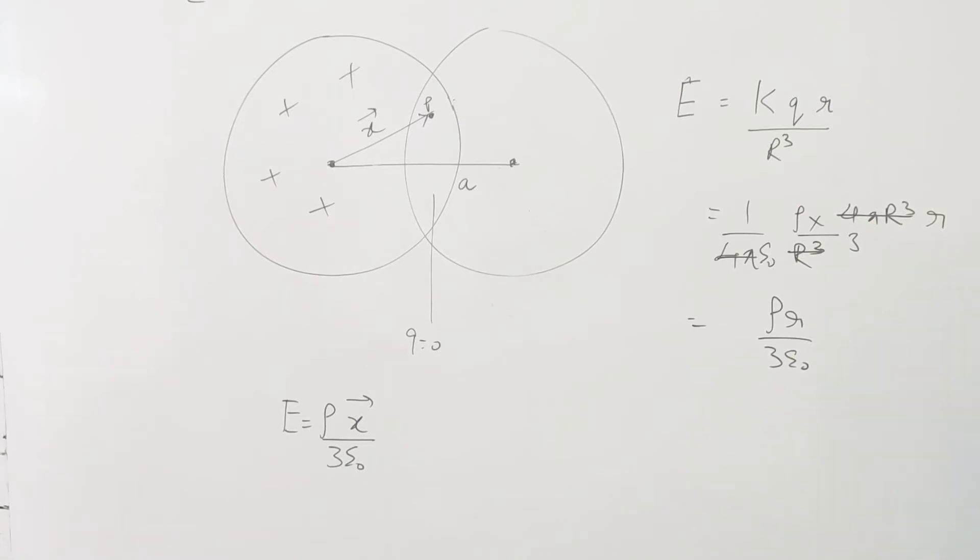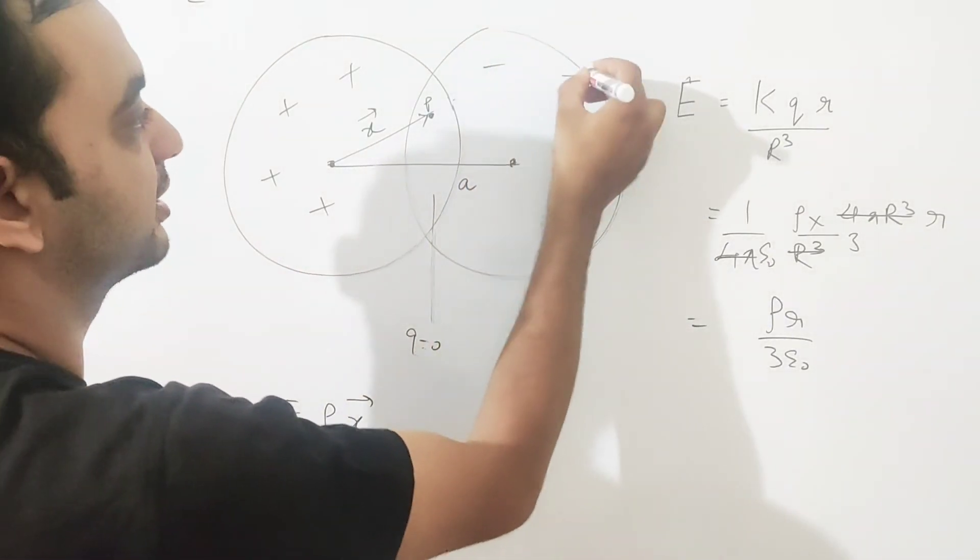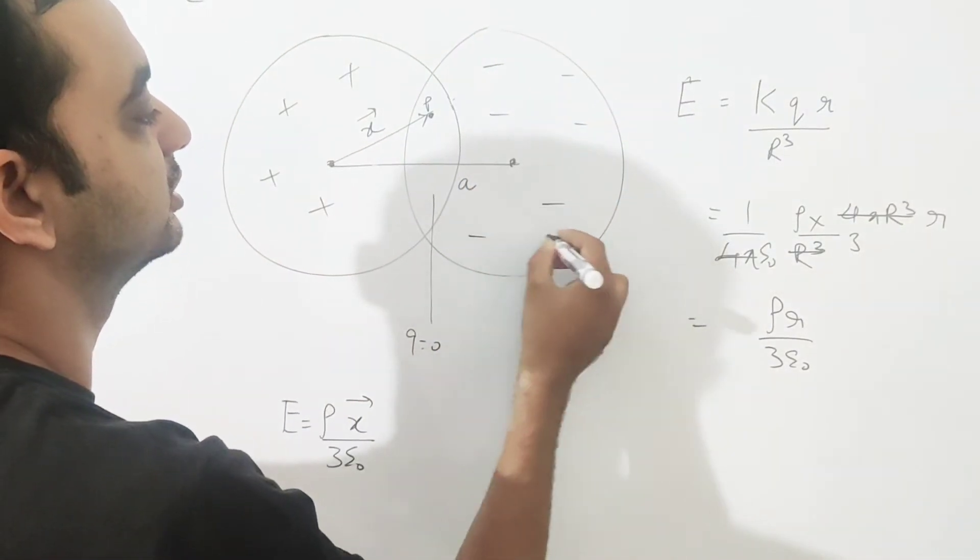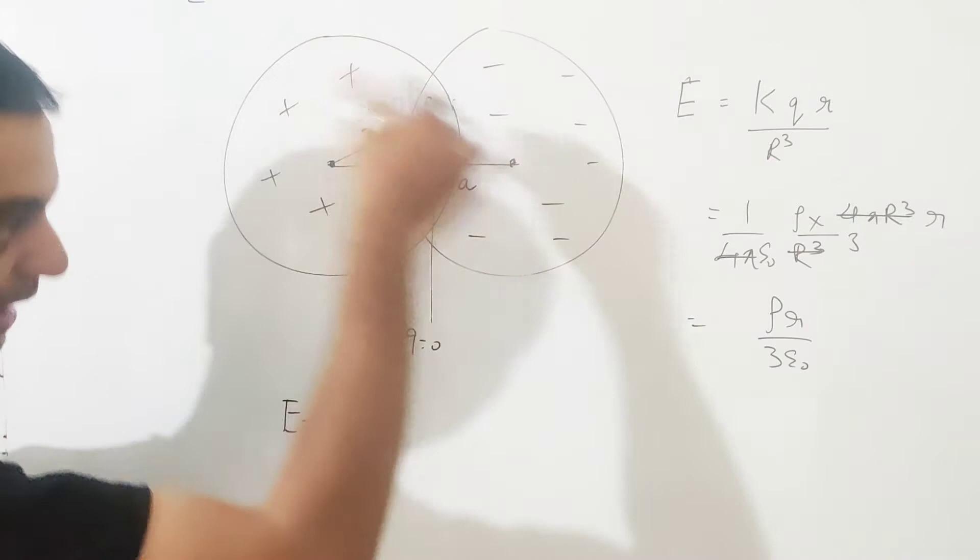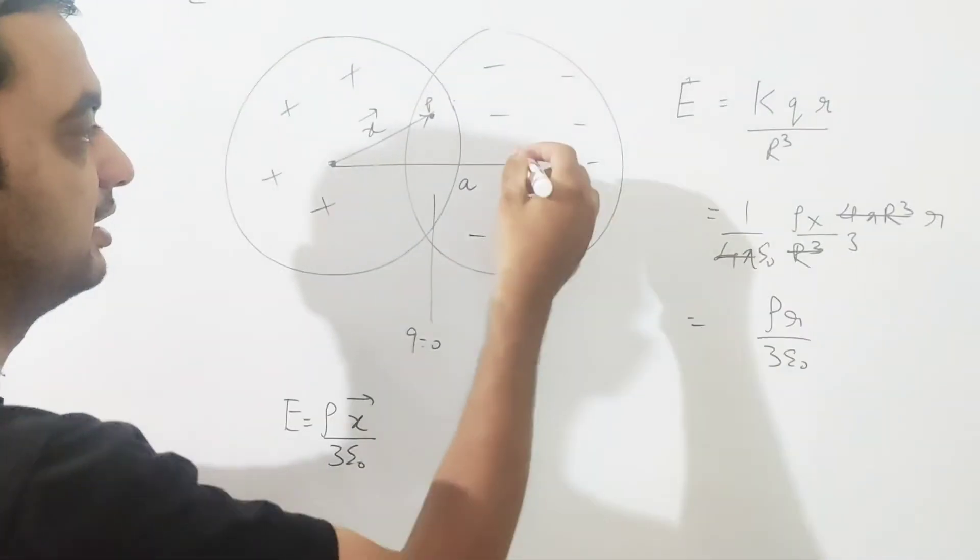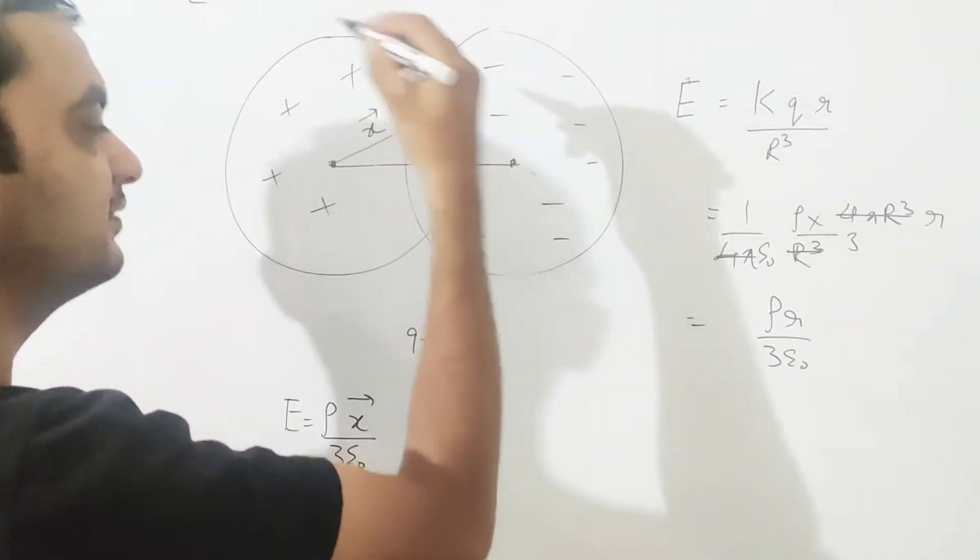Next, the center separation is a and in the overlapping region, the density is minus rho. So the electric field contribution from the negative density sphere should also be considered with the radial vector.